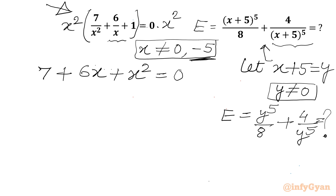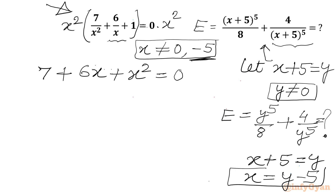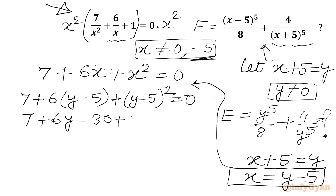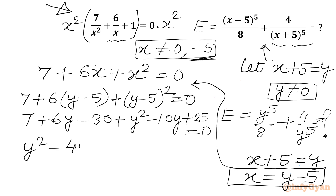Now I will apply x = y − 5 into the quadratic equation 7 + 6x + x² = 0. Substituting: 7 + 6(y−5) + (y−5)² = 0, which expands to 7 + 6y − 30 + y² − 10y + 25 = 0. Combining like terms: y² − 4y + 2 = 0.